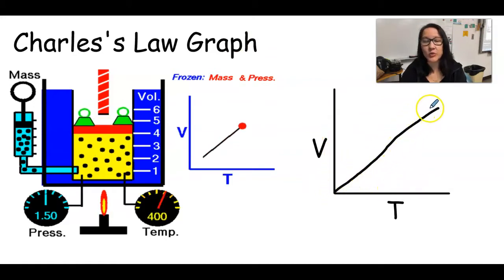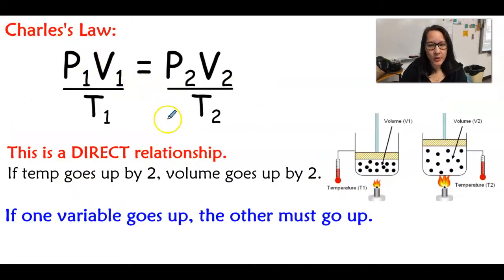So they both increase together. So now here's the equation, and Charles' Law is going to be when pressure is constant, and so we ignore the pressure when we do the calculation with our equation. So it's a direct relationship. If temperature were to be increased times 2, then the volume is going to increase times 2. They're going to do the same thing together.